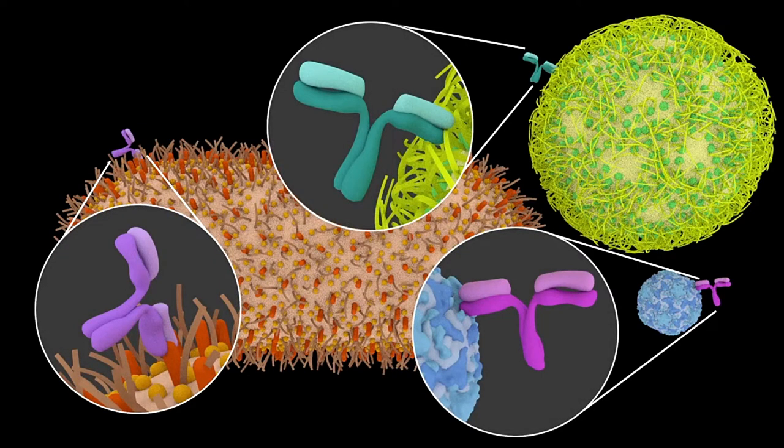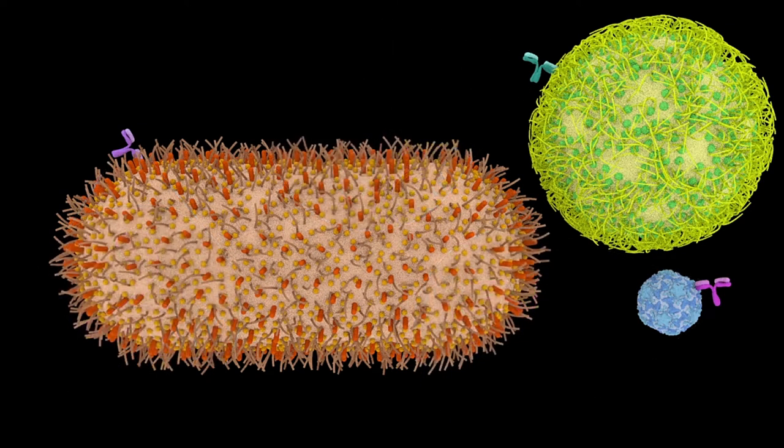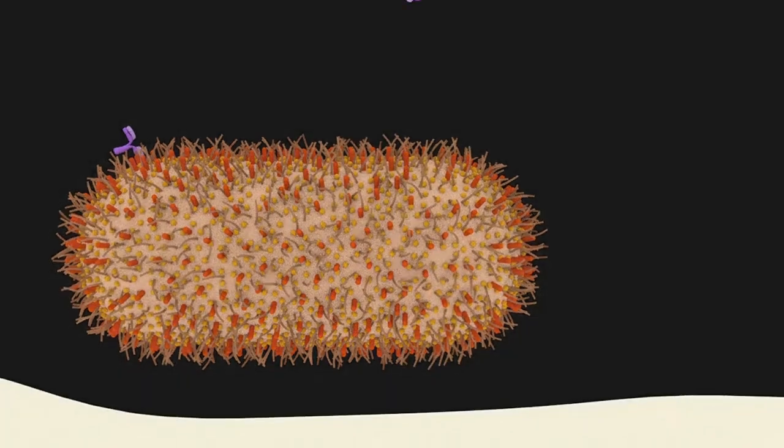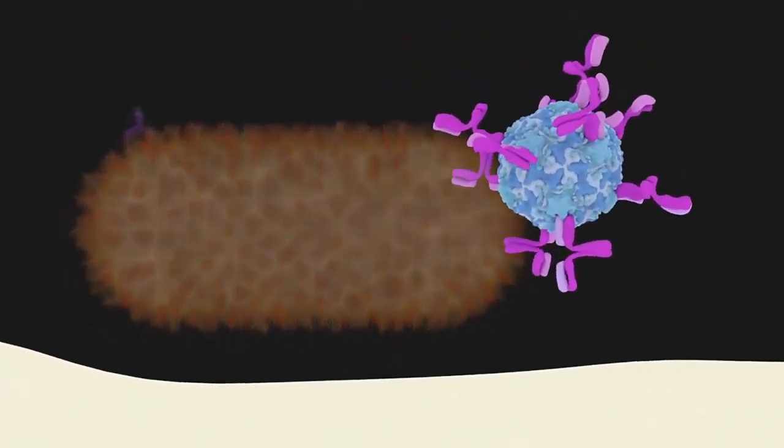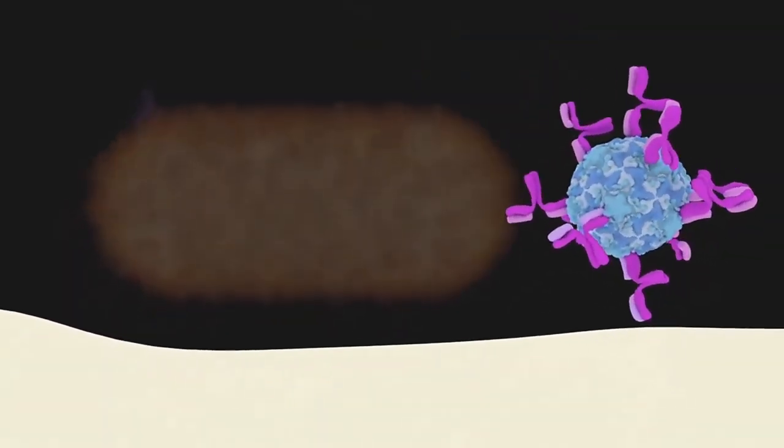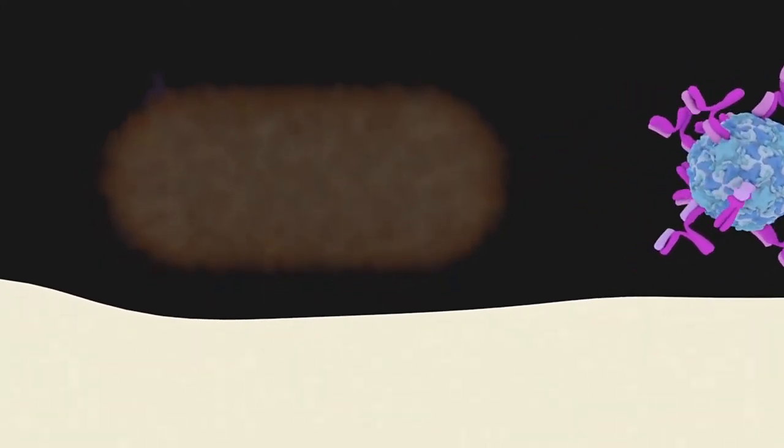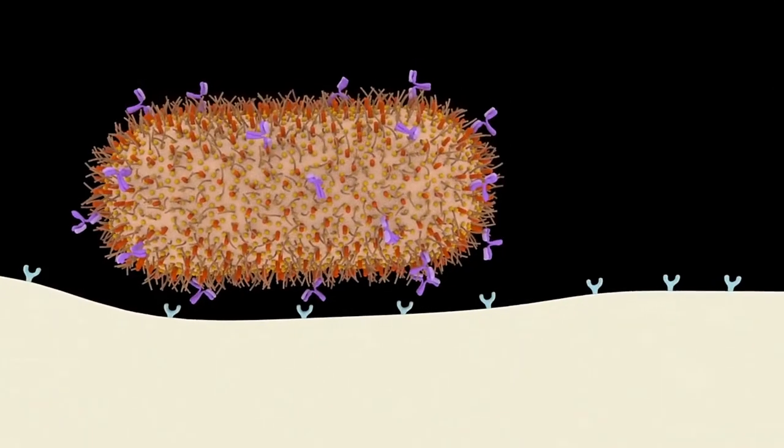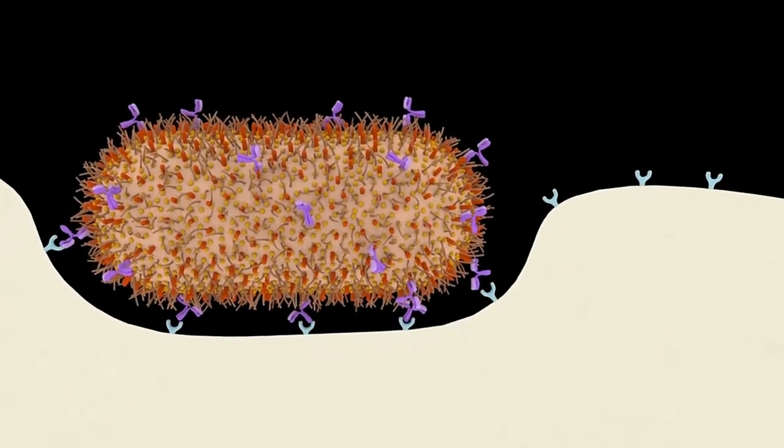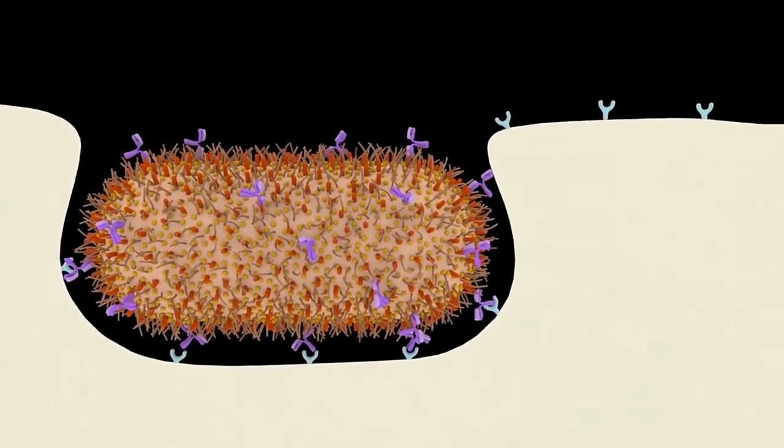Antibodies can serve two functions. Antibodies can neutralize pathogens by binding to their antigens and blocking their action, such as preventing a virus from entering a cell or blocking a bacterial toxin. Antibodies also mediate the destruction of pathogens by acting as markers that other cells in the immune system recognize.